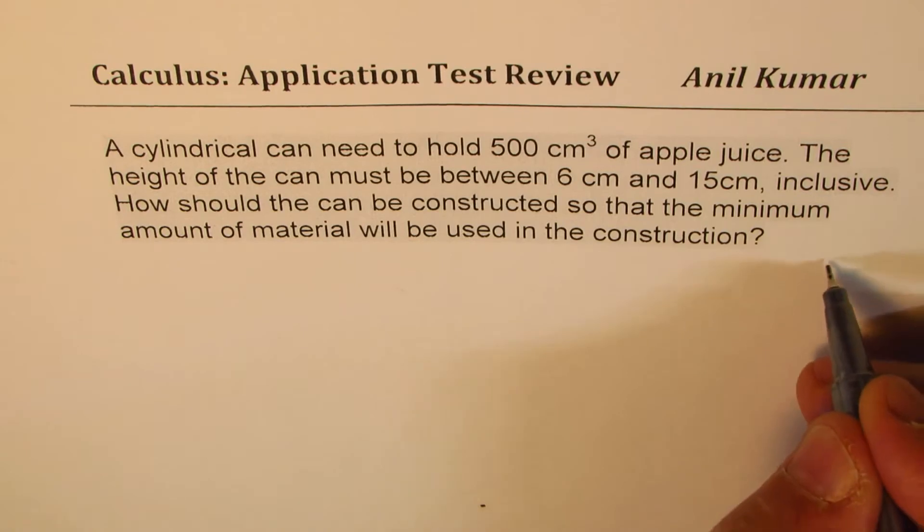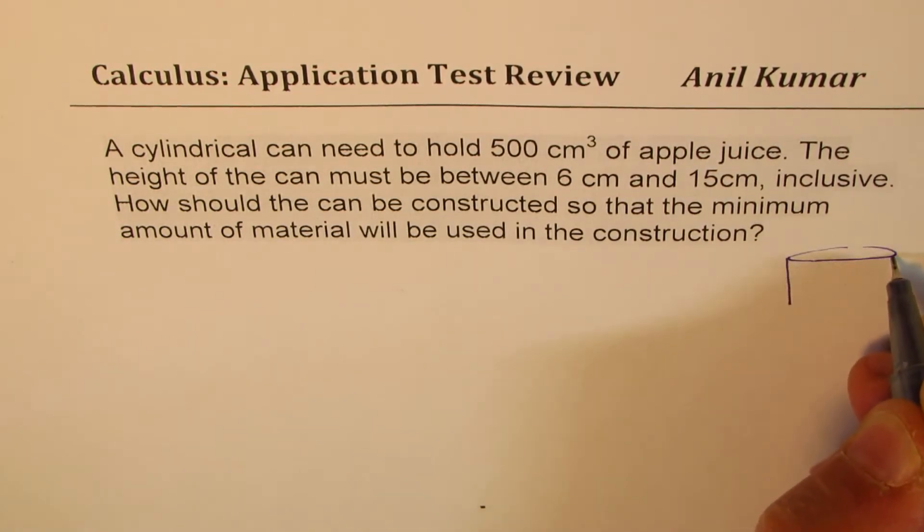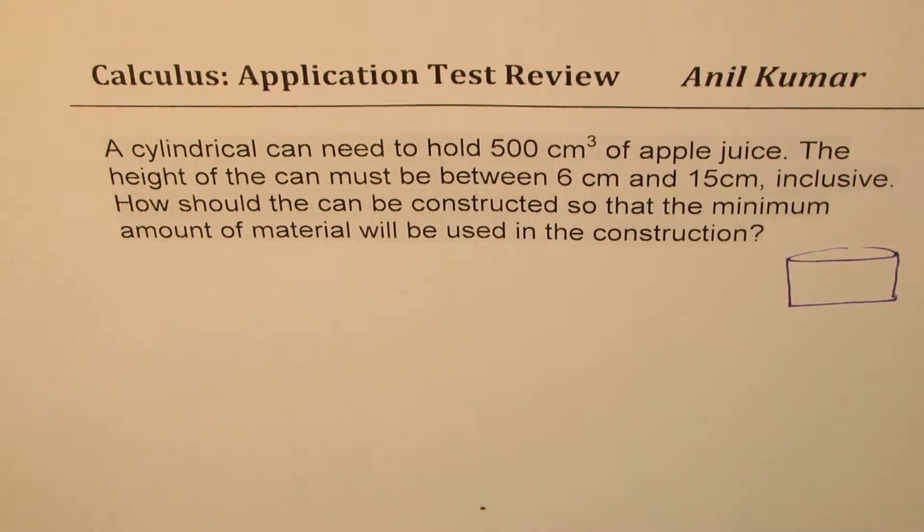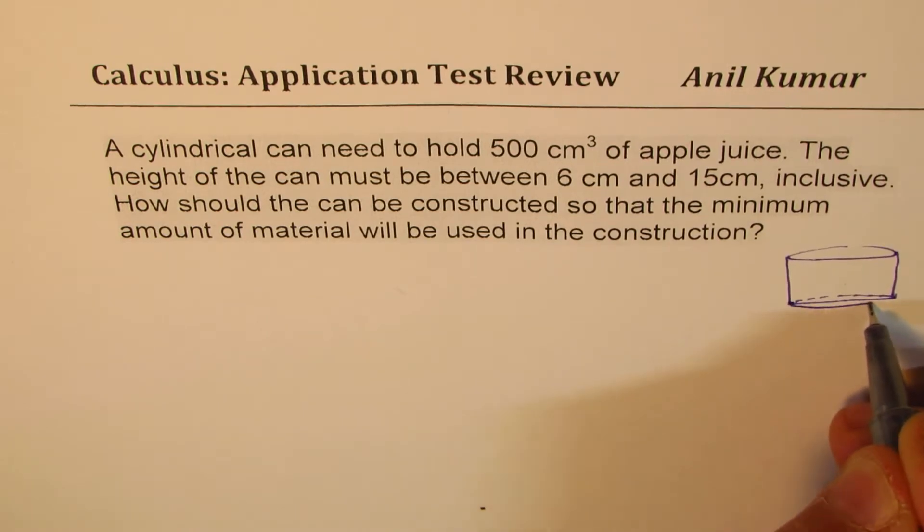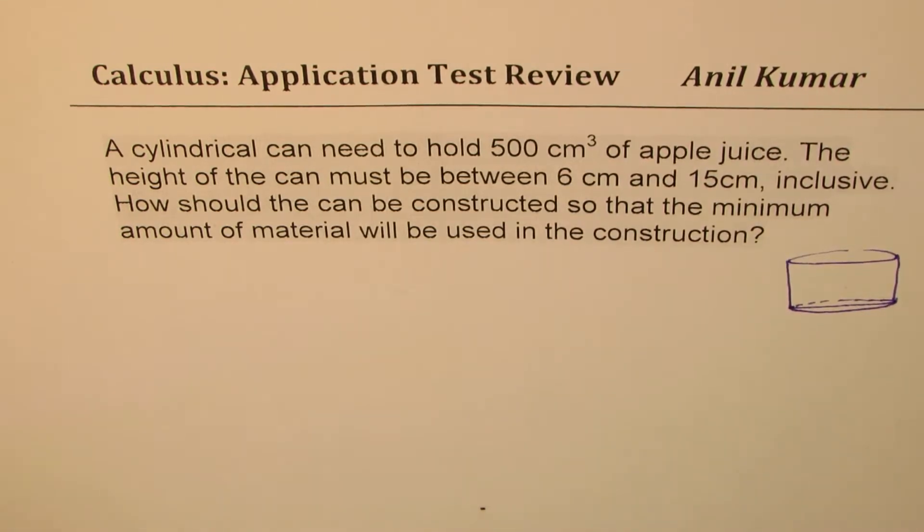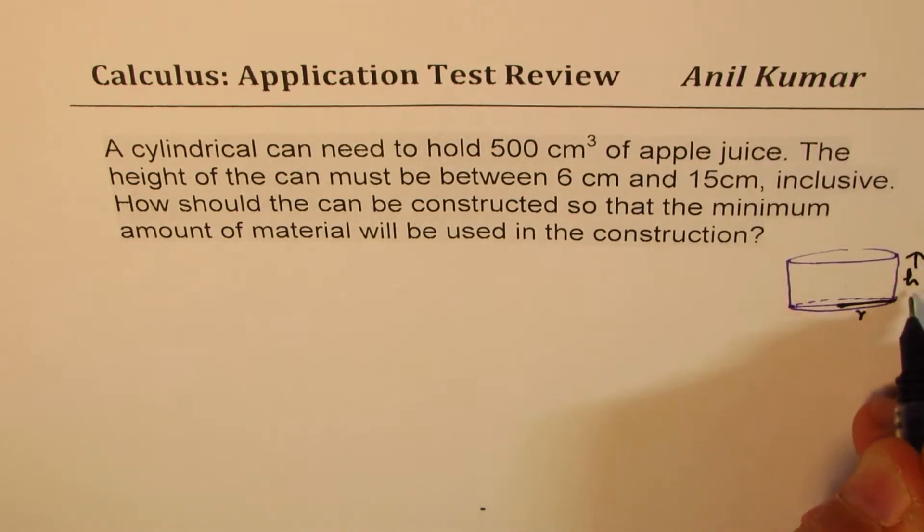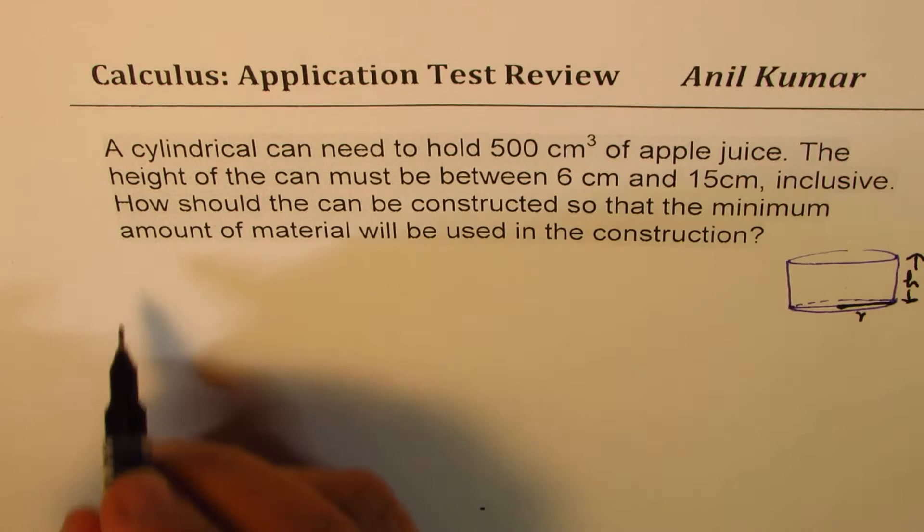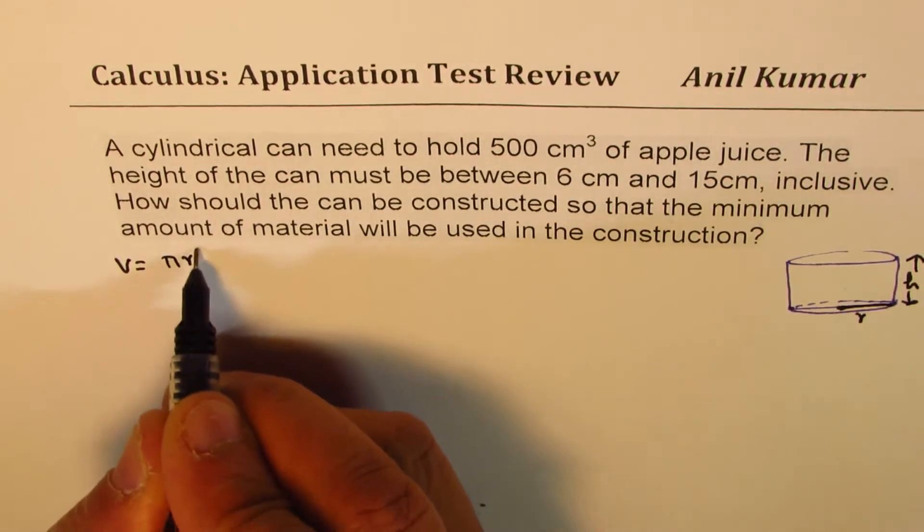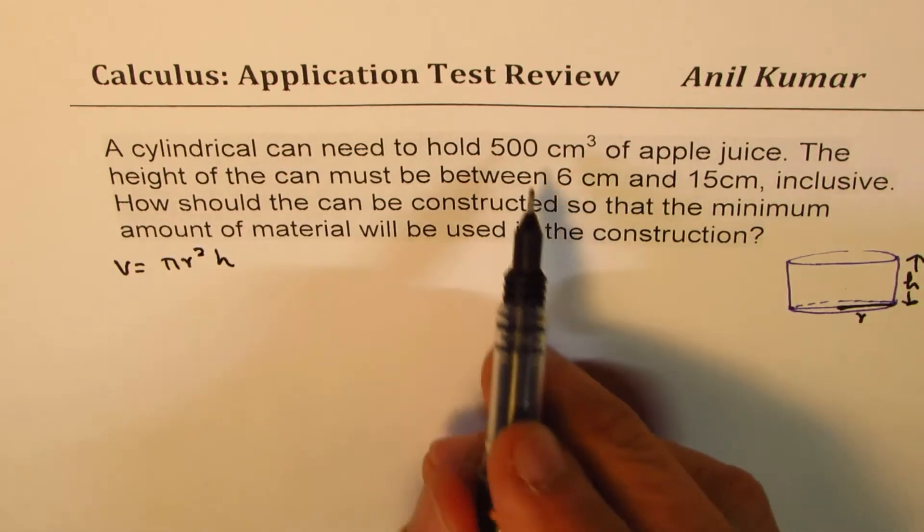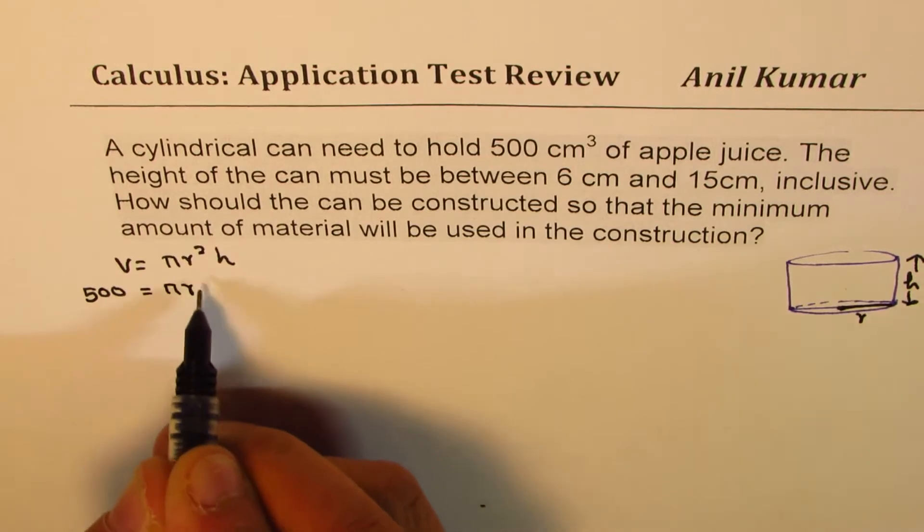So that's the question for us. Let us say we are talking about a cylinder whose radius is r and height is h. So we are saying that the radius is r and height is h. In that case, we know volume equals π r² h. Since we are given volume of 500, we can relate r with h.